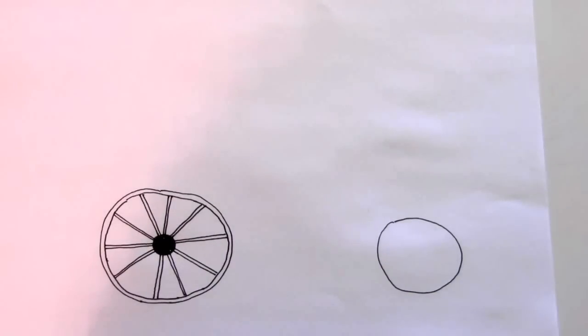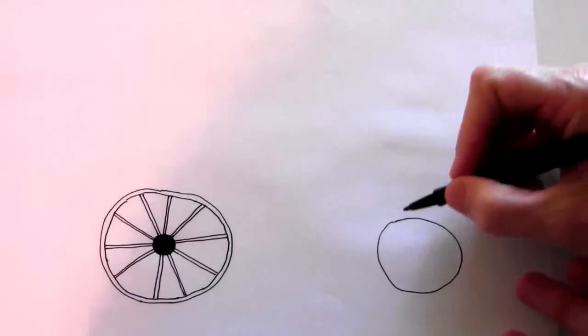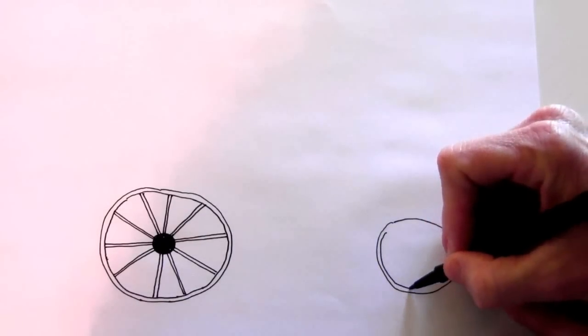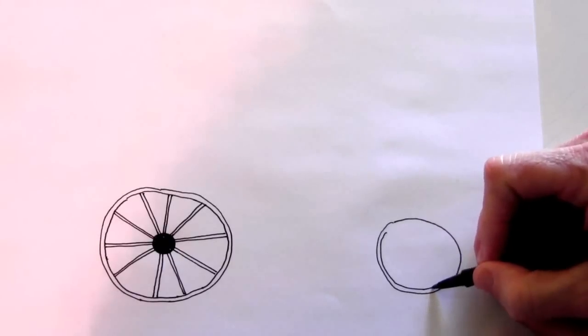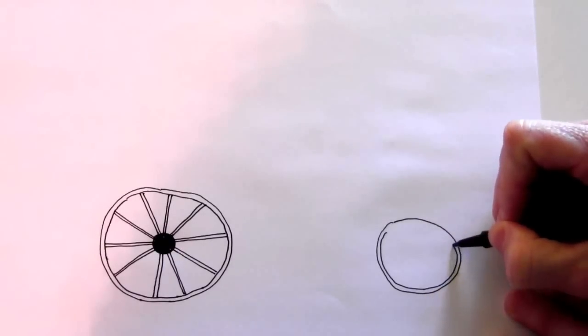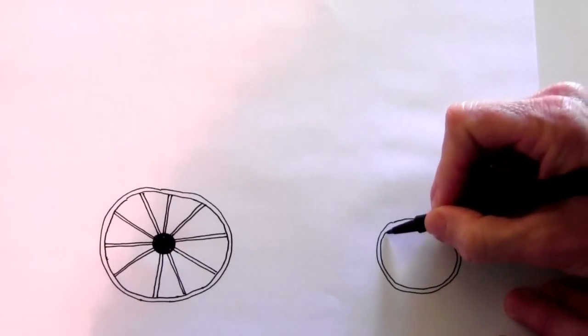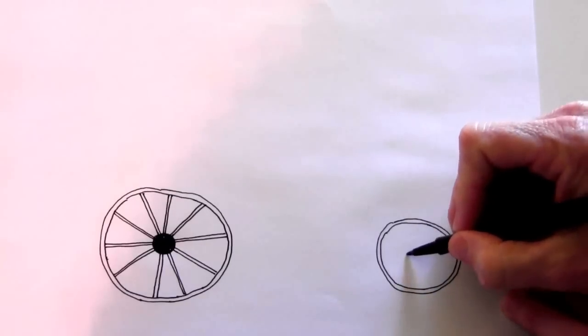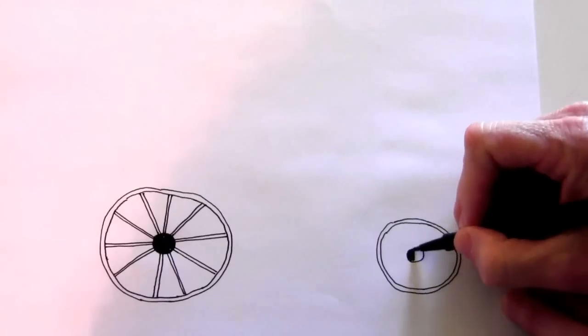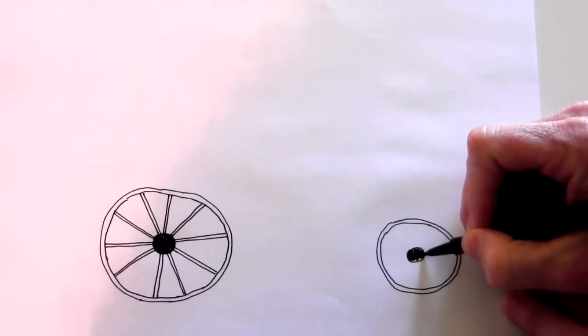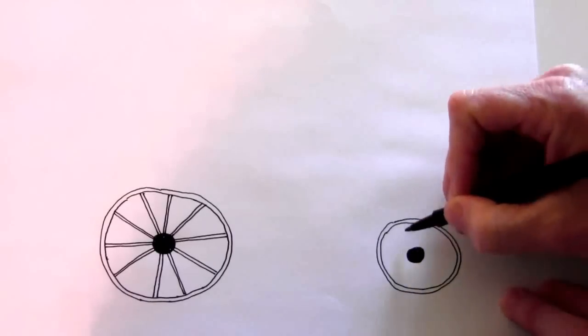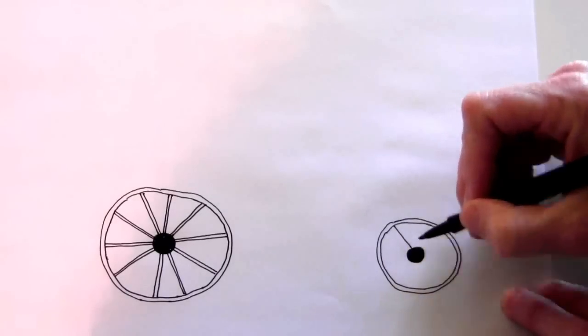And now do the same thing on the other, the smaller wheel. A line that follows around the inside. Then a black circle in the middle. And then start drawing the spokes.